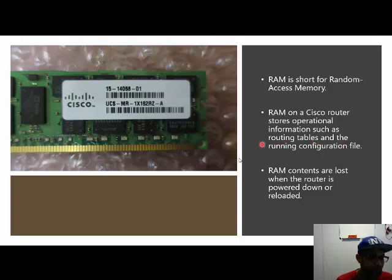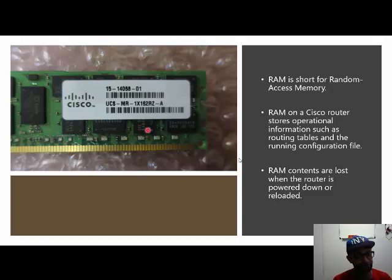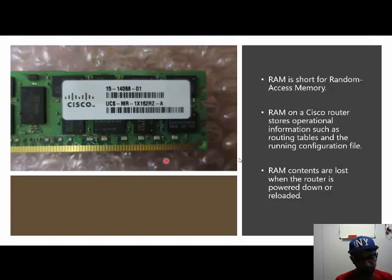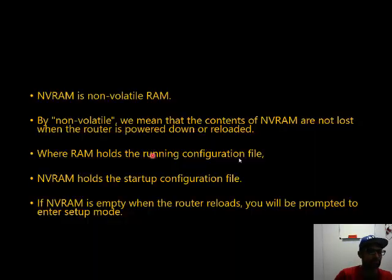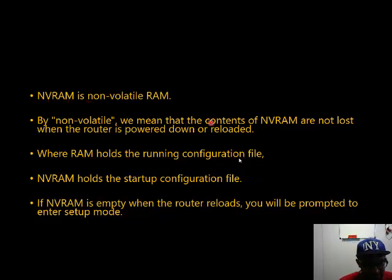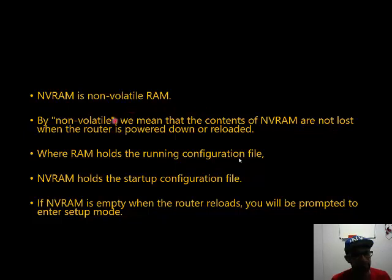So if you want to keep this content, please save it on another memory. The non-volatile RAM — NVRAM — means that the contents are not lost. So the NVRAM is very good for you to put your backup. Nothing will be lost if you make a backup; when the router is powered down or reloaded, the content will not be lost. The RAM holds the running configuration file — the configuration that is running now on the Cisco router. But the NVRAM holds the startup configuration file.